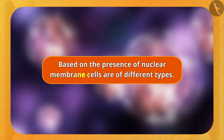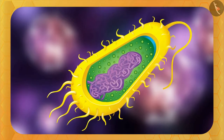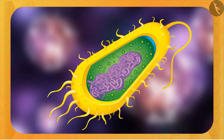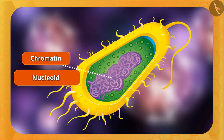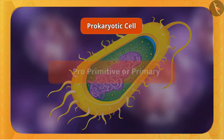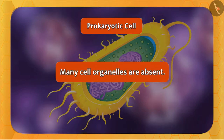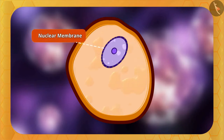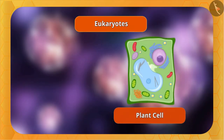Based on the presence of a nuclear membrane, cells are of different types. In some organisms like bacteria, the nuclear region may be poorly defined, with no nuclear membrane. Such an undefined nuclear region containing only chromatin is called a nucleoid. Organisms whose cells lack a nuclear membrane are called prokaryotes — 'pro' means primitive and 'karyote' means nucleus — and many cell organelles are absent in these cells. Organisms with cells having a nuclear membrane are called eukaryotes, and they contain all cell organelles. Examples include plant and animal cells.